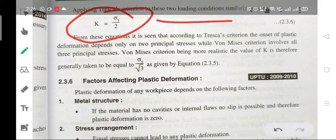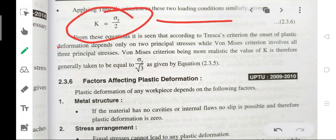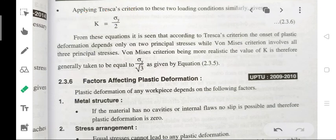k = sigma_y/2. From these equations, it is seen that according to Tresca's criteria, the onset of plastic deformation depends only on two principal stresses, while Von Mises' criteria